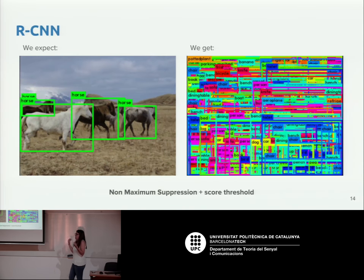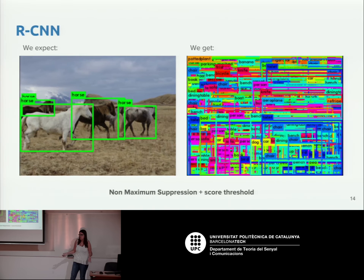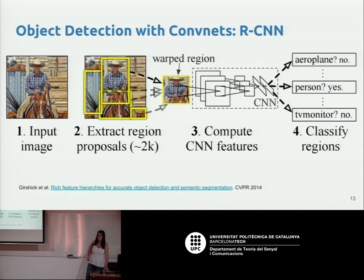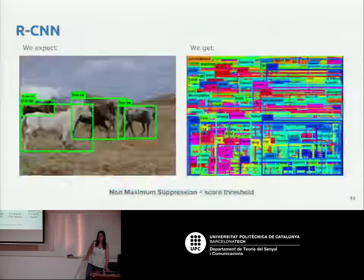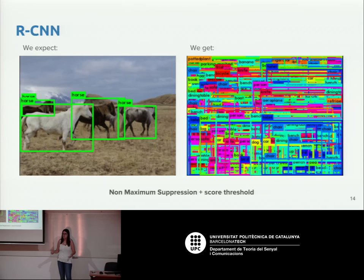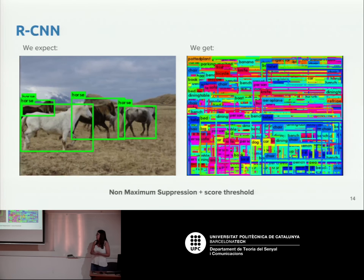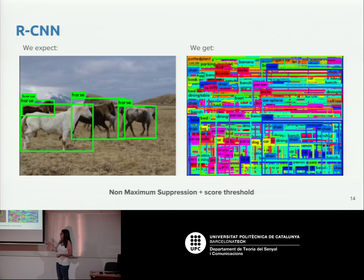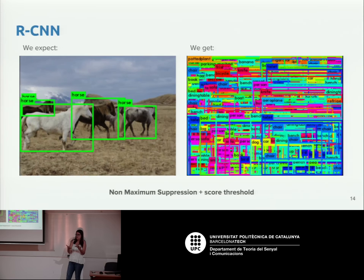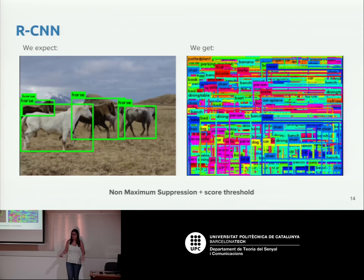The desired output is a single bounding box surrounding each object, but since you're analyzing 2,000 proposals, a post-processing step is needed to filter redundant or low-quality proposals. This procedure is called non-maximum suppression and score thresholding: first you check overlap between bounding boxes and keep the one with the higher confidence when there is large overlap, and you also discard proposals with low confidence scores.